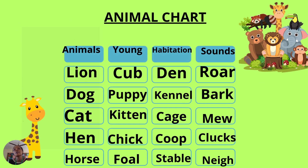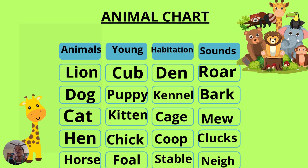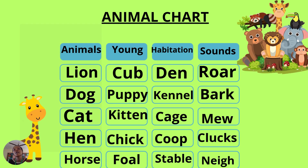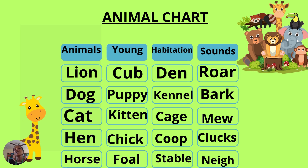Now let's move to animal charts. Under our animal charts you can see: the animals, their young ones — meaning their babies or children — their habitat, which is where they live, and the sounds each animal makes. We start with the first one, which is the lion. The baby of the lion is called a cub, and the lion lives in a den.